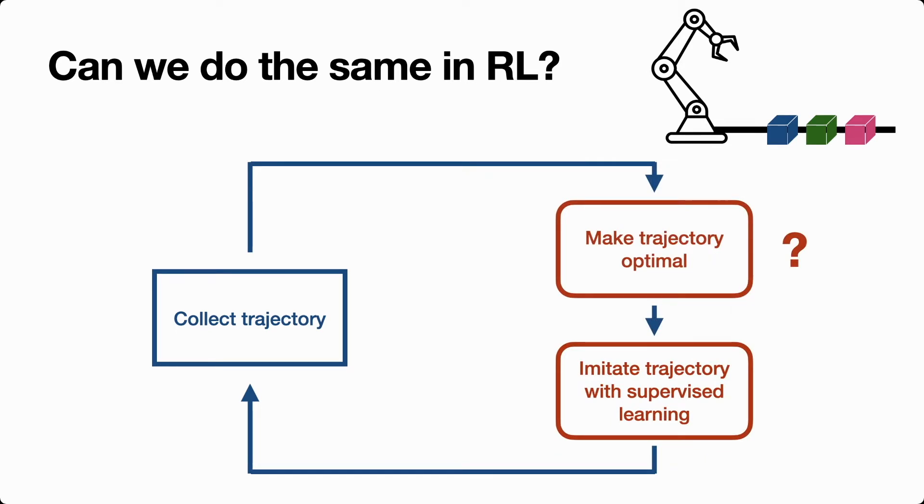I want to make this work, and maybe one way to do this might be to, before we imitate the trajectory, modify the trajectory in a way that makes it an optimal demonstration, at which point imitating it would make sense. Supposing that we had access to such a device that made trajectories optimal, then this loop would lead to an RL algorithm that uses supervised learning to learn its policy. But in the general RL setting, there's no way to implement this mechanism without having additional external information like a human expert.